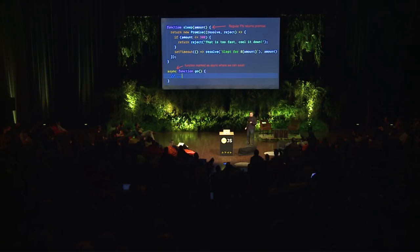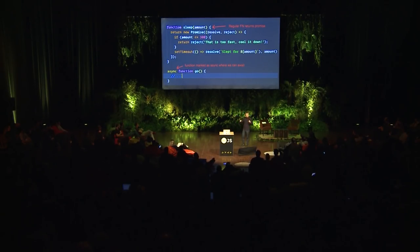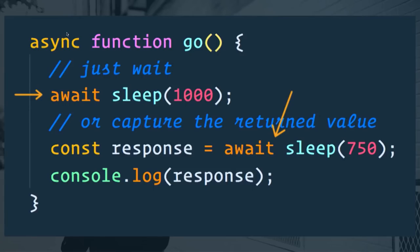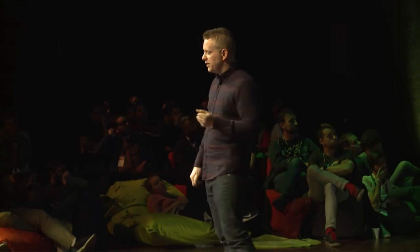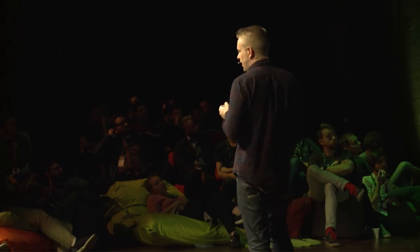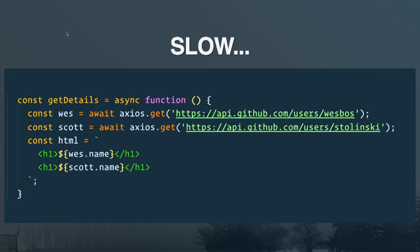How does it work? First, mark your function as async — your regular promise-returning functions don't change. You create an async function by writing the word async in front of it, then simply await things inside of it. You can await the sleep function and it will wait until the promise resolves, or if you care about what's coming back — maybe data from an API — you can store that in a variable. It's the best of both worlds.